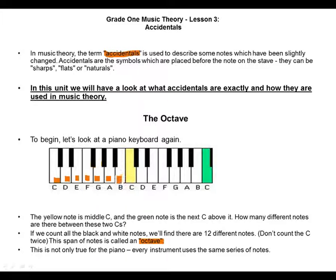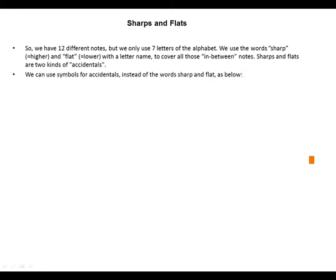Sharps and flats. We have 12 different notes, but we only use seven letters of the alphabet. We use the words 'sharp' for higher and 'flat' for lower, with letter names to cover all those in-between notes. Sharps and flats are two kinds of accidentals.